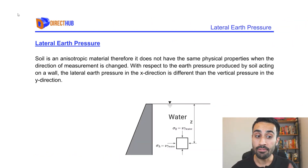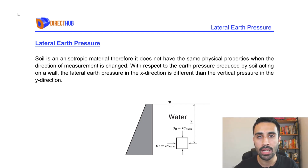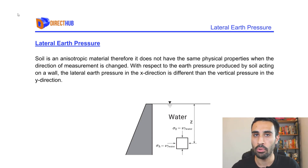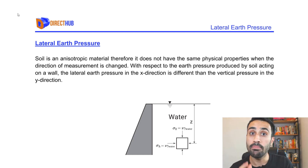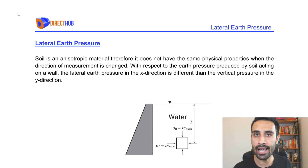Lateral earth pressure. First thing: we know soil is an anisotropic material. Therefore, it does not have the same physical properties when the direction of measurement is changed. With respect to the earth pressure produced by soil acting on a wall, the lateral pressure in the X direction is different than the vertical pressure in the Y direction. We're mainly going to focus on the lateral earth pressure — the X direction, which is different than the Y direction.